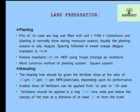For land preparation, pits of one meter cube should be dug and filled with soil, FYM, and carbofuran. Planting is normally done during the monsoon season, i.e., July to August. Normal spacing followed is 6 x 6 meters, especially for sweet orange and Nagpur mandarin, whereas Kino mandarin uses 1.8 x 1.8 meter spacing for high density planting using Citrange as rootstock. The planting method followed in citrus cultivation is the square system.